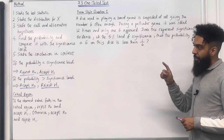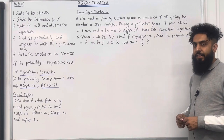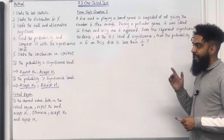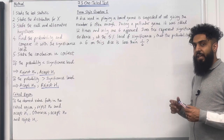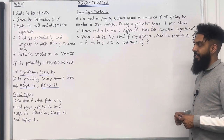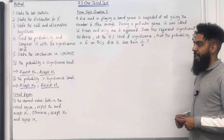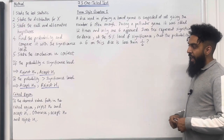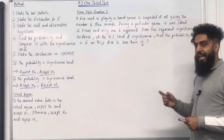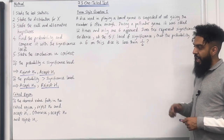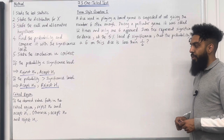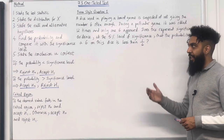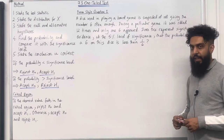If the probability calculated is less than the significance level, this implies reject H0, accept H1. If the calculated probability is more than the significance level, this implies accept H0, reject H1. Critical region: if the observed value falls in the critical region, reject H0 and accept H1. Otherwise, accept H0 and reject H1. These are the key facts of 7.3 one-tailed test.